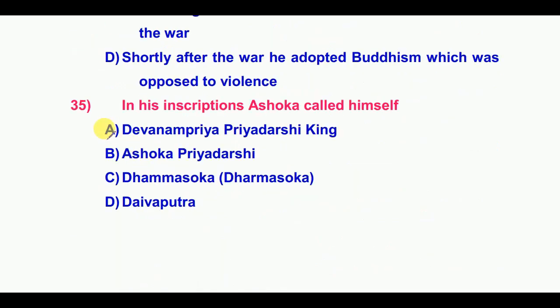Thirty-fifth question: In his inscriptions, Ashoka called himself — the answer is Devanampiya Piyadassi (the Beloved of the Gods, of gracious mien).